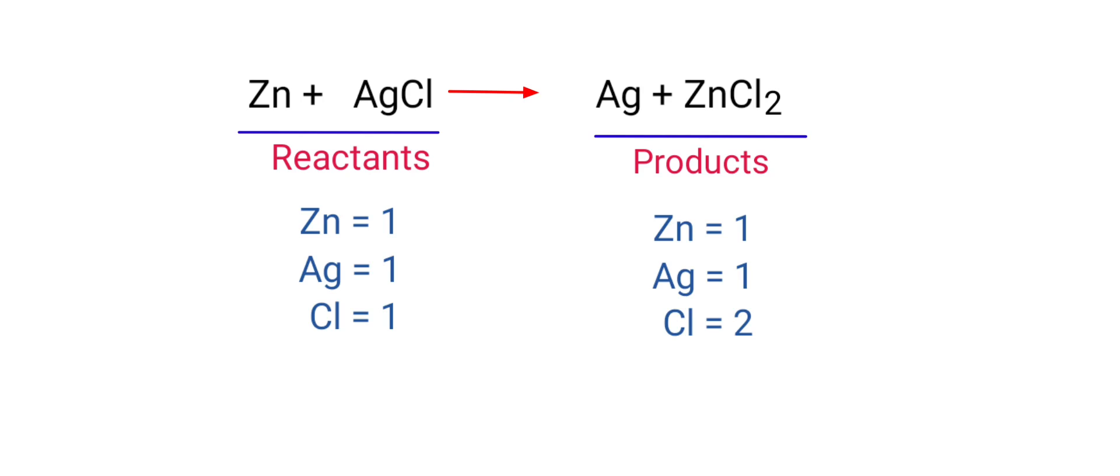The number of atoms are not balanced on both sides. To balance the chemical equation, we need to make use of coefficients. A coefficient is a number that we place in front of a chemical formula.